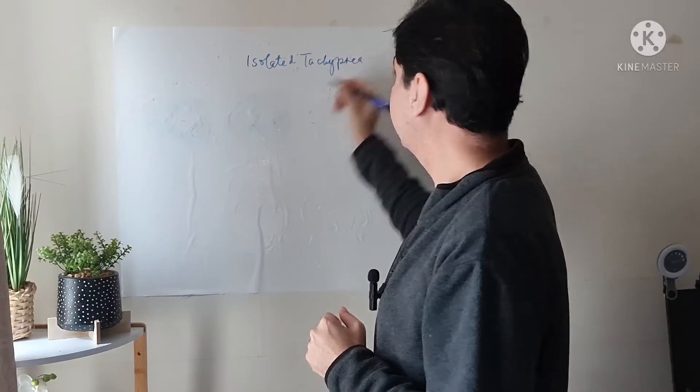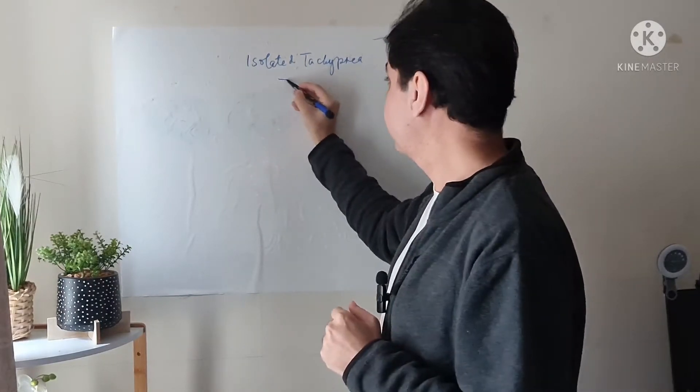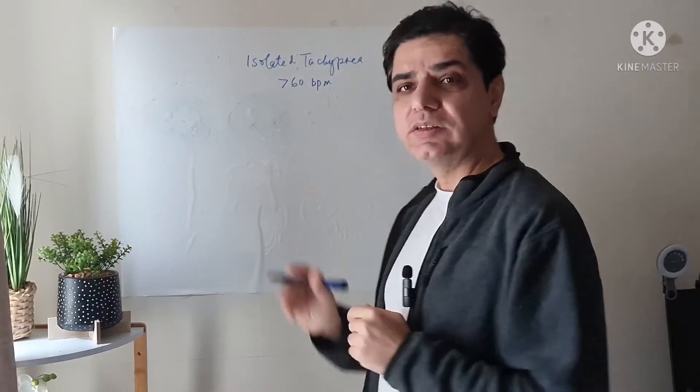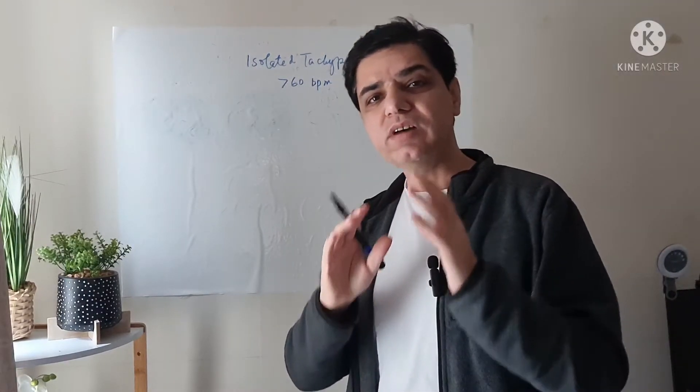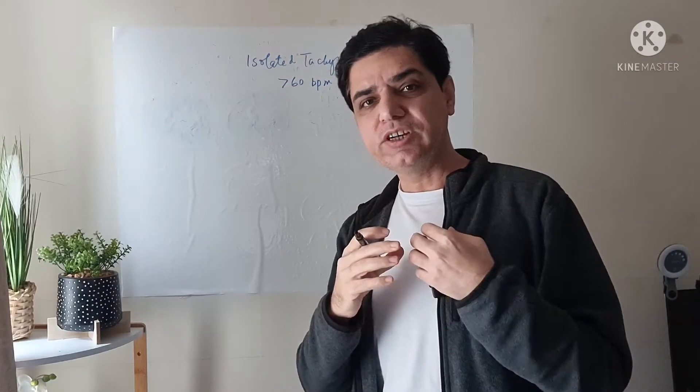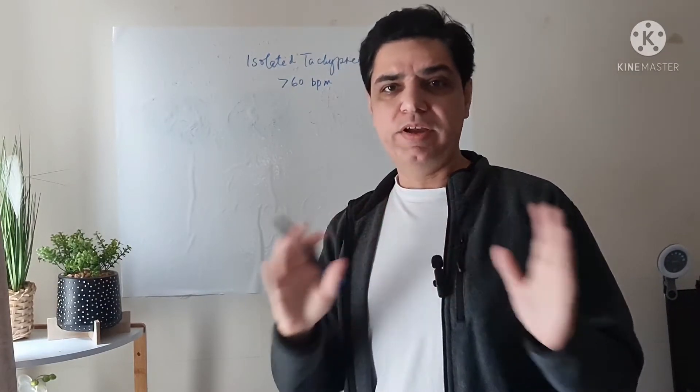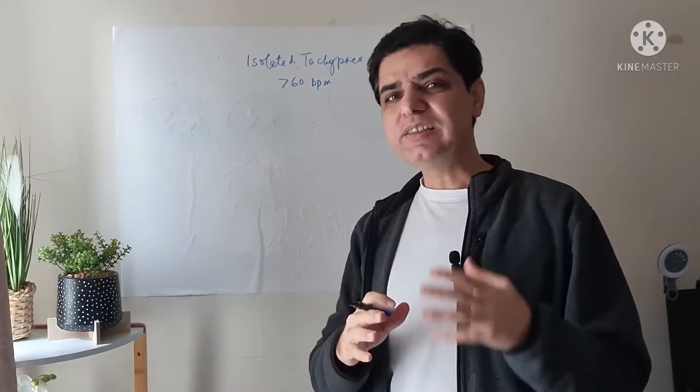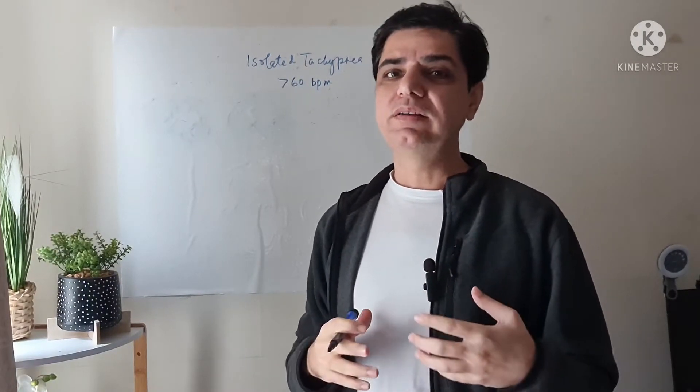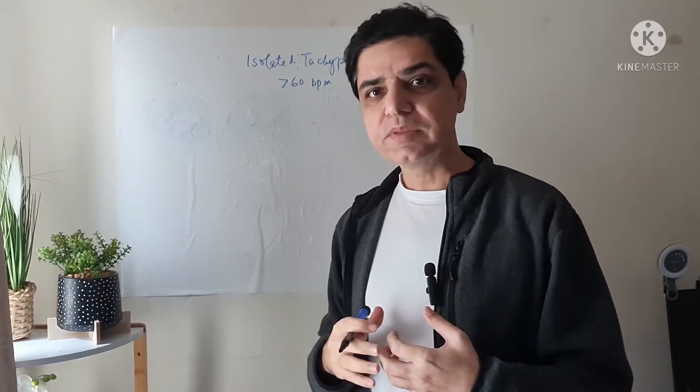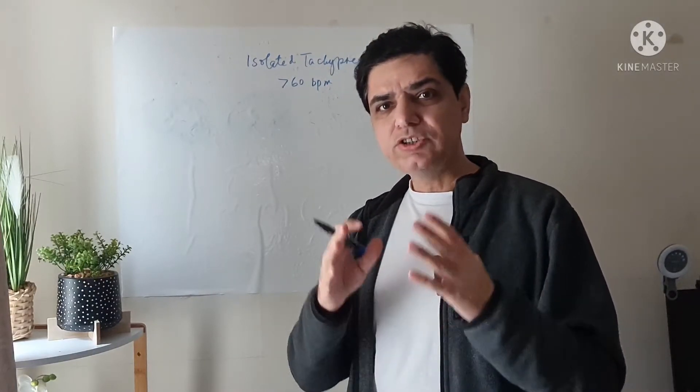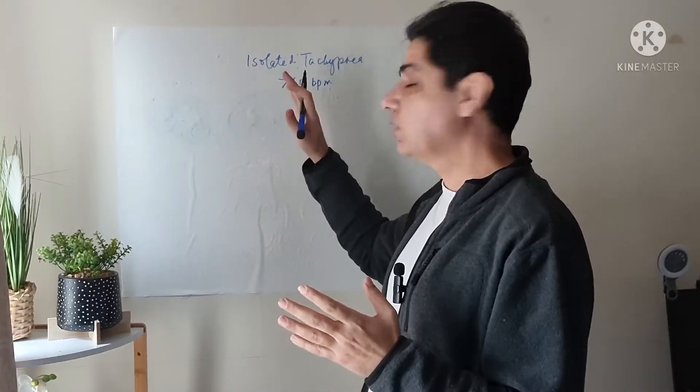Isolated tachypnea means that the newborn has a respiratory rate greater than 60 breaths per minute, but hasn't got any other signs. If you auscultate the chest, the chest is perfectly clear to auscultation. It might be associated with mild increase in work of breathing, like mild subcostal and substernal retractions. It might be associated with tachycardia or might not be.